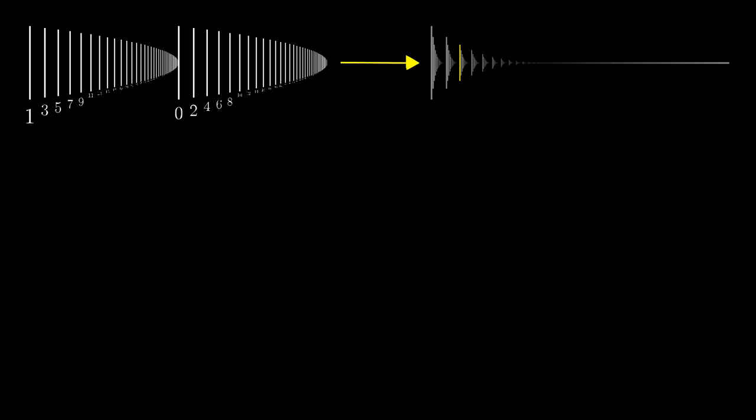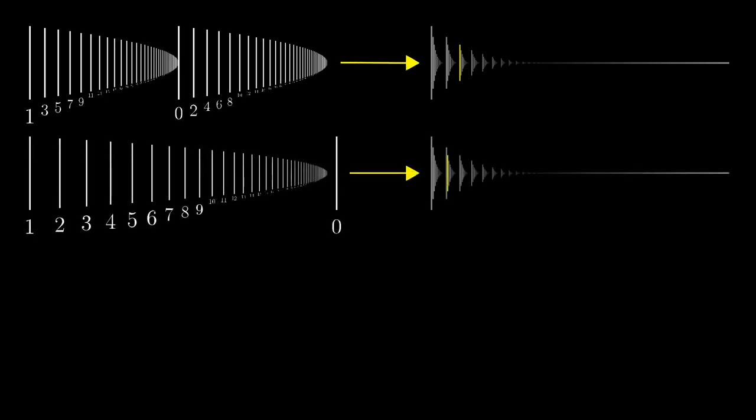This way we have assigned a formal ordinal number to a certain well-order on the natural numbers, and we can do the same with any well-order on natural numbers. So whenever we get a well-order on natural numbers, we construct the appropriate ordinal number.